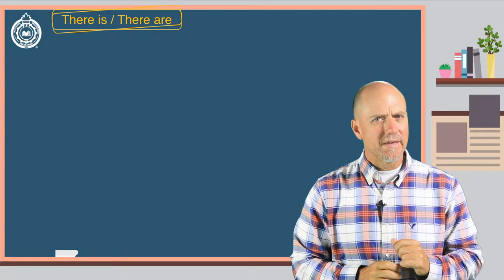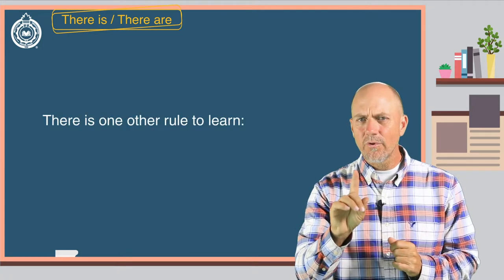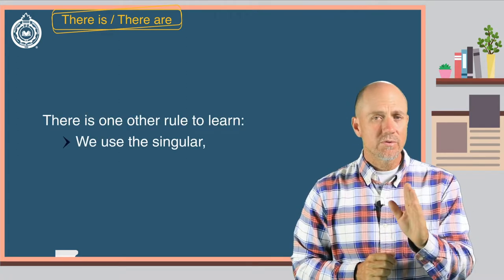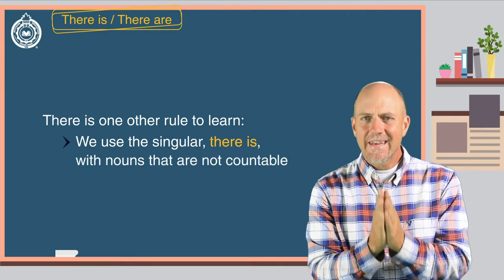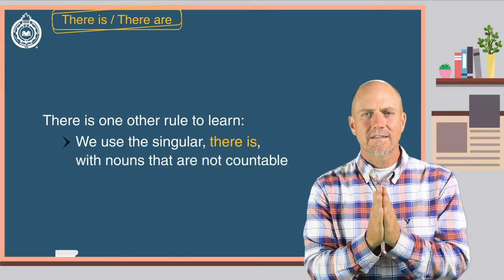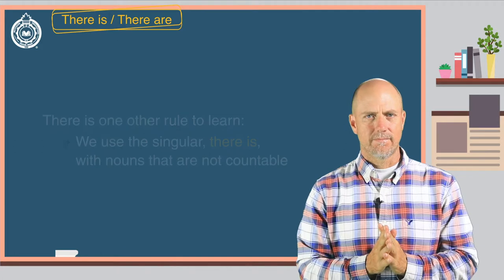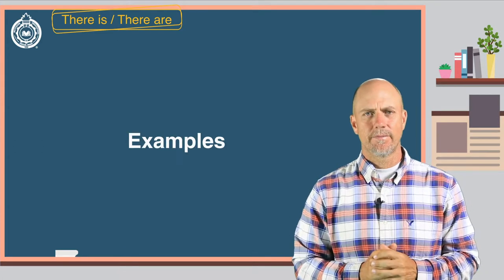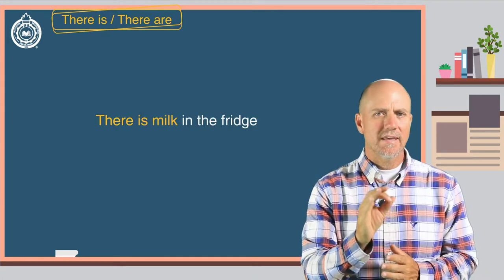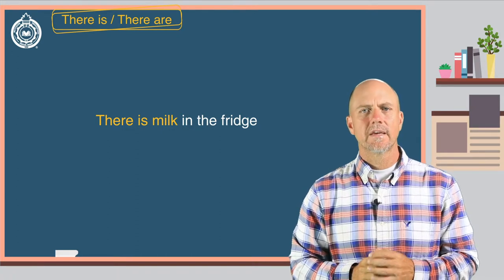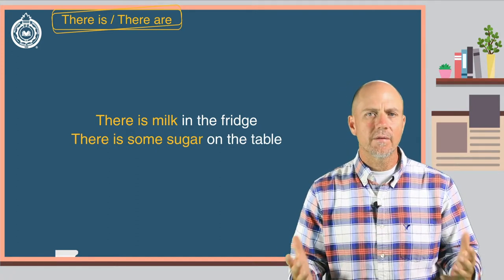Now, there is one other rule to learn. We use the singular there is with nouns that are not countable. Here are some examples. There is milk in the fridge. There is some sugar on the table.